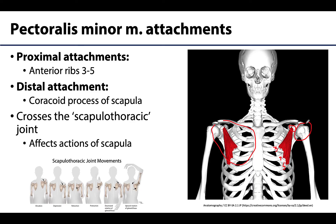Instead, the pectoralis minor muscle will affect the scapulothoracic joint — in quotes because it is not a typical synovial joint like the shoulder, elbow, or wrist. What we're describing is more the movements of the scapula on the thoracic cage. The thoracic cage is the rib cage connected to the sternum and vertebrae, and this describes how the scapula moves in comparison to the thorax.